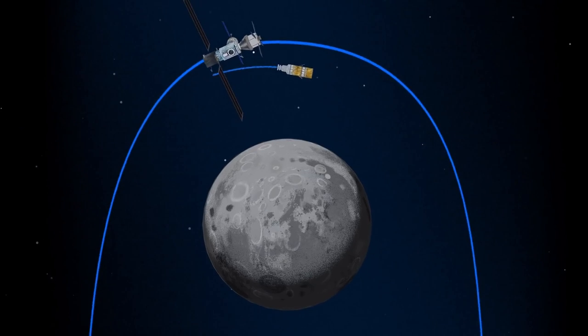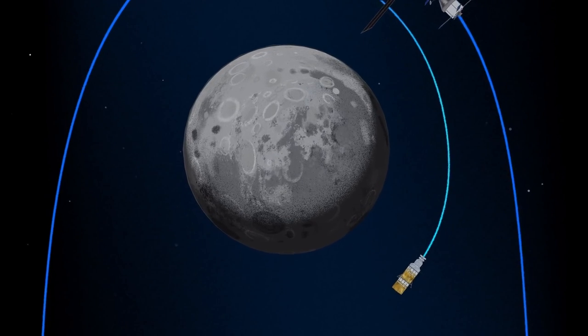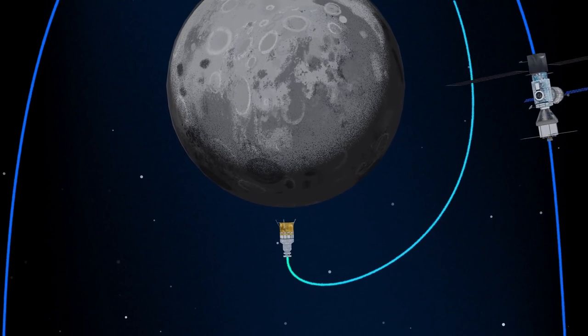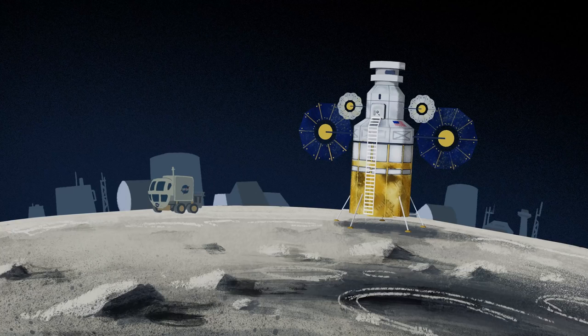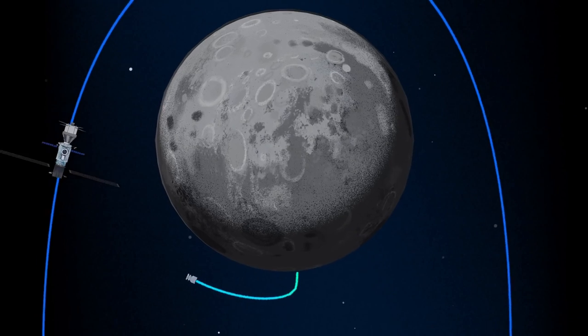The lunar lander system itself is built for three unique steps: descending from the halo orbit of Gateway down to a low lunar orbit, descending from low lunar orbit to the surface, and once the lunar mission is complete, launching from the surface of the Moon and ascending all the way back to the orbiting Gateway.